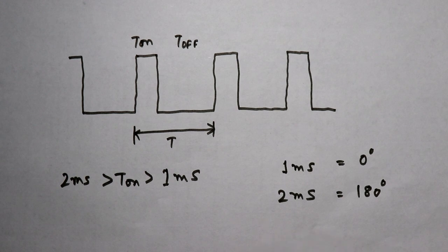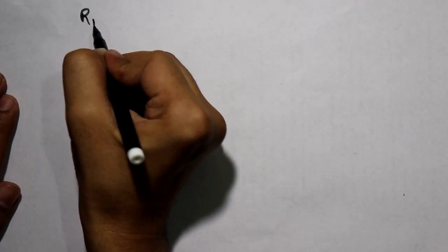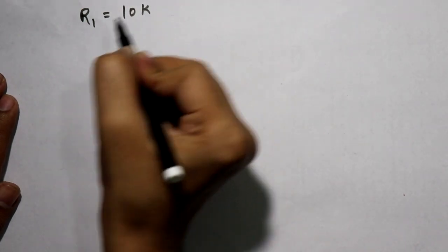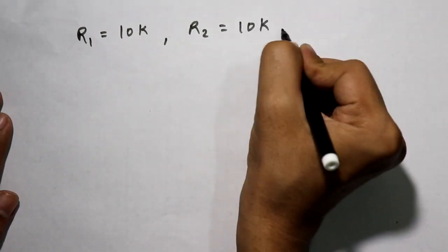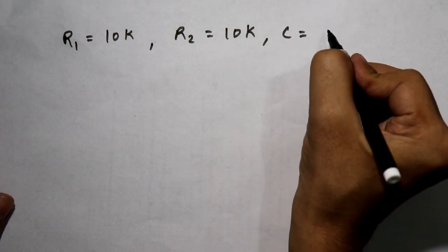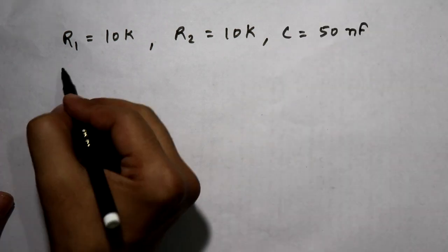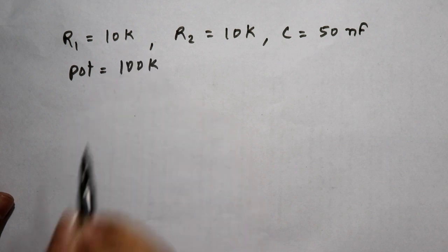We will verify this using the oscilloscope. Now let's come to the calculation part. I have taken R1 equal to 10 kilo-ohms, R2 as 10 kilo-ohms, and C equal to 50 nanofarads. And our potentiometer value is 100 kilo-ohms.